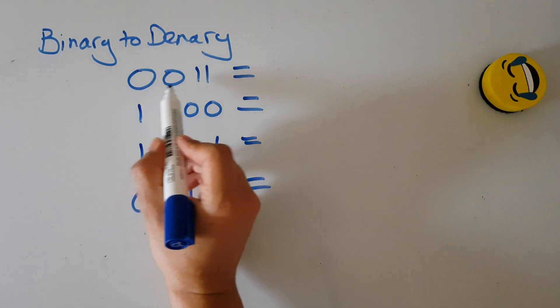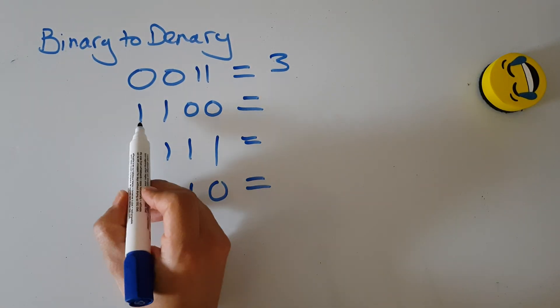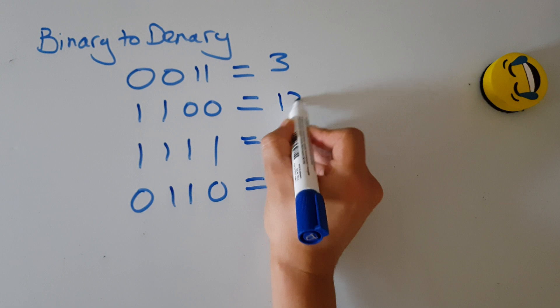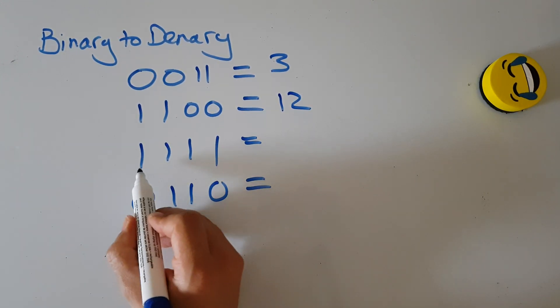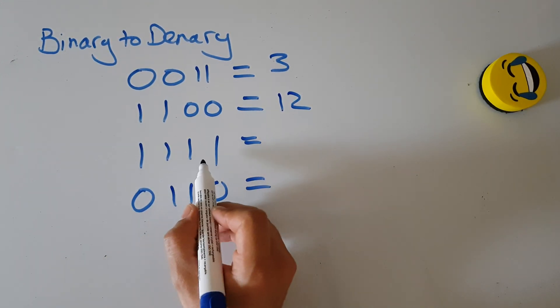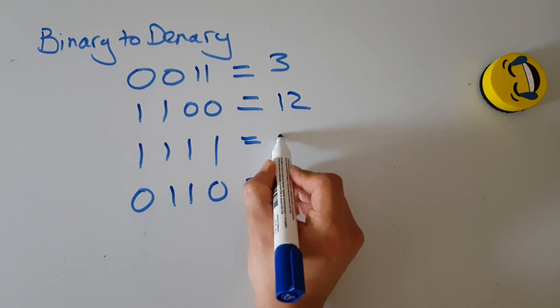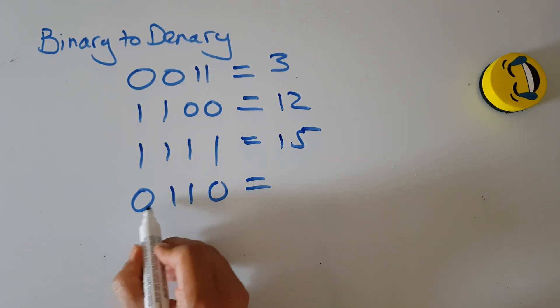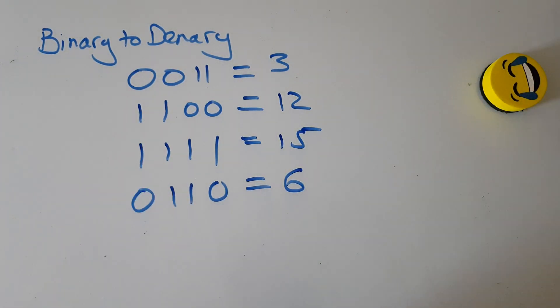Okay, so the first one - well, two and one are switched on, so that's three. The second one is eight and four - that's twelve. This is all of them. Eight plus four is twelve, plus three - well, it's fifteen. And zero, four, and two - that's six. And that's it. That's your conversion between binary and denary.